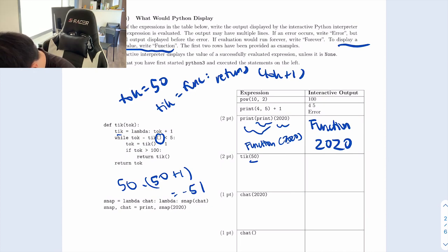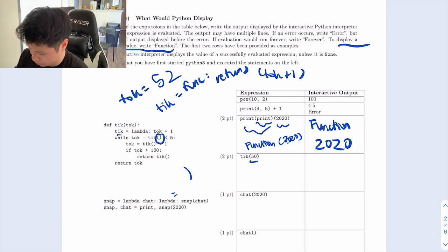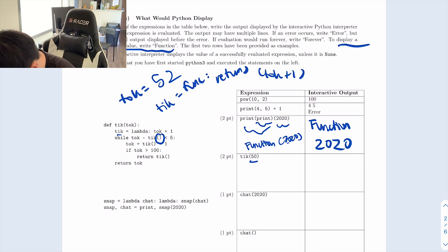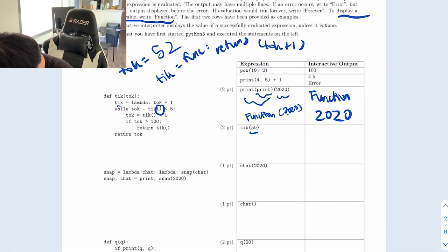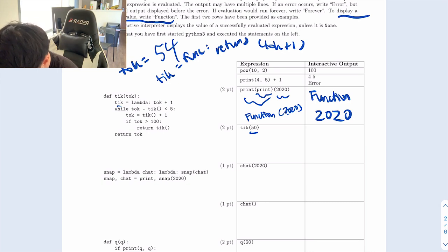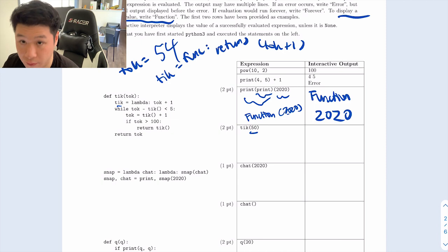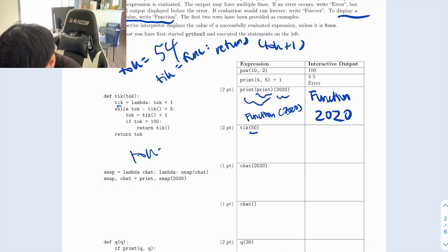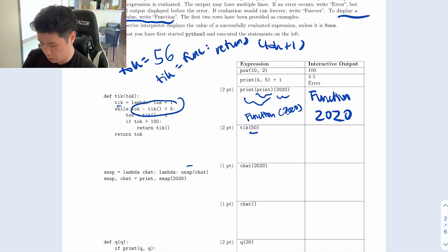So talk minus tick: that's 50 minus (50 + 1), which equals negative 1. Negative 1 is less than 5, so we stay in the while loop. Then talk equals tick(talk) plus one, so talk equals 51 + 1 = 52. Now talk is 52. Next iteration: 52 minus (52 + 1) = negative 1, which is still less than 5. Then talk equals 53 + 1 = 54. I can already see the pattern.